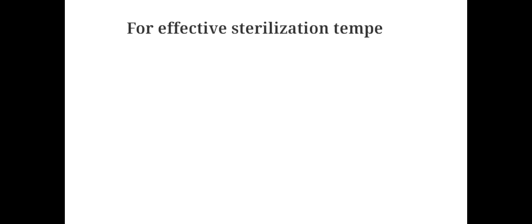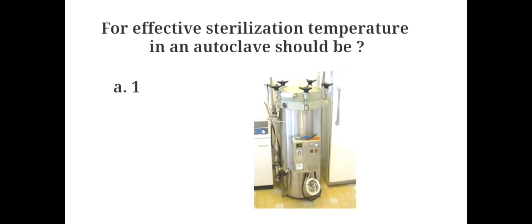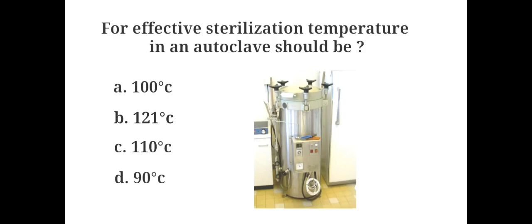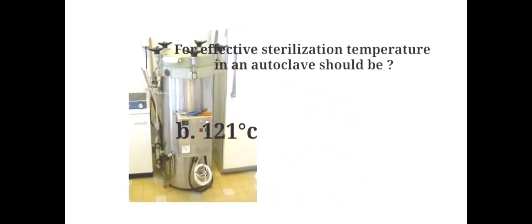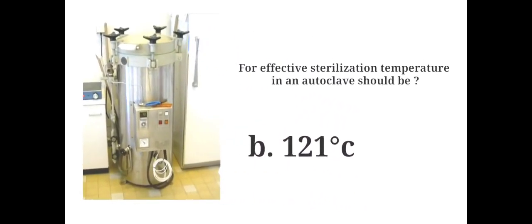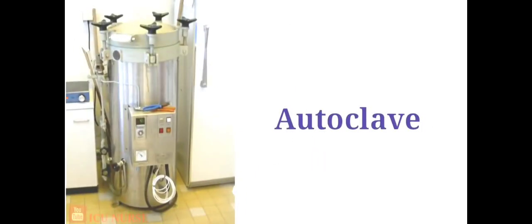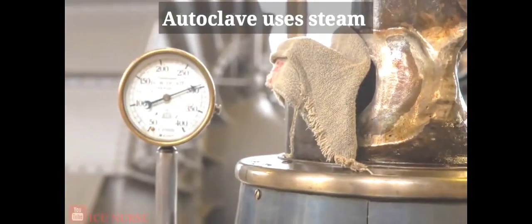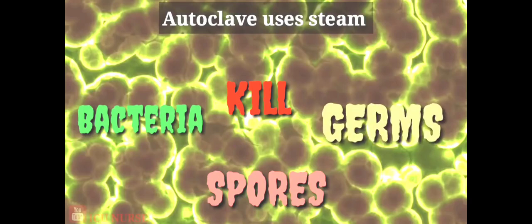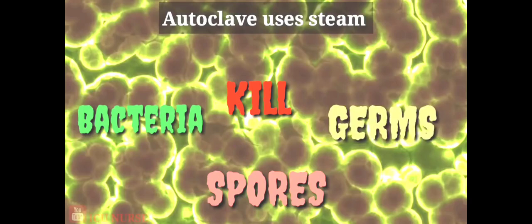For effective sterilization, temperature in an autoclave should be: A. 100 degrees Celsius, B. 121 degrees Celsius, C. 110 degrees Celsius, D. 90 degrees Celsius. The answer is B. 121 degrees Celsius. A very basic autoclave is similar to a pressure cooker. Both use the power of steam to kill bacteria, spores and germs resistant to boiling water and powerful detergents.